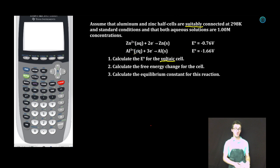Between zinc ion and aluminum ion, zinc ion is more likely to be reduced, which means that aluminum is more likely to be oxidized than zinc. So we're going to keep the zinc half reaction exactly as it is. We're going to keep the reduction potential exactly as it is.